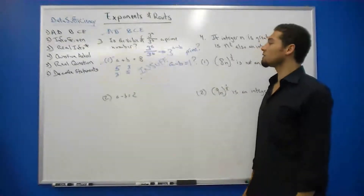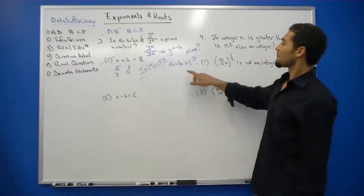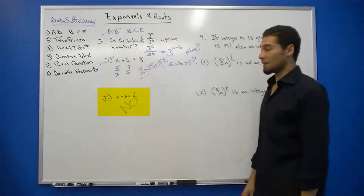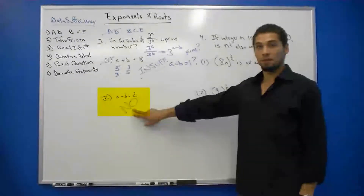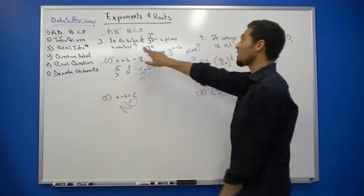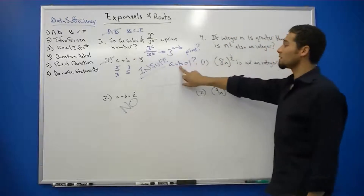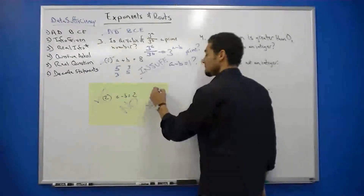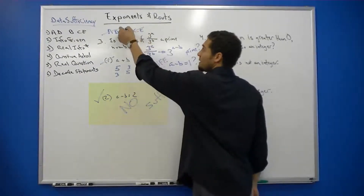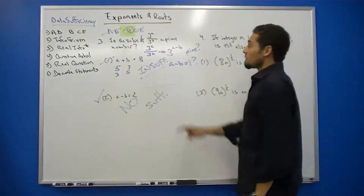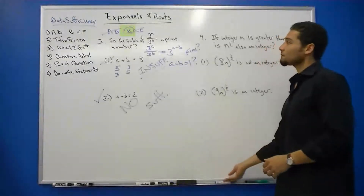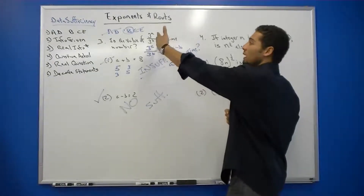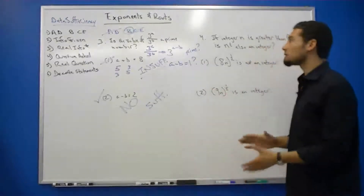Statement 2 says A minus B equals 2. Our question was: does A minus B equal 1? The answer according to this is no — it does not equal 1. That is a sufficient answer; it is a definitive answer to the question. This is a yes or no question, and we have a definitive no — that is sufficient. We can eliminate C and E and choose B. That is one variation of an exponent question in data sufficiency. It's very important to recognize we're dealing with exponents and apply the rules for exponents.